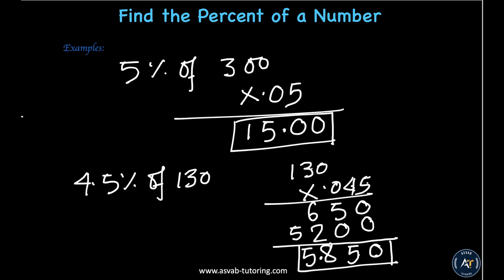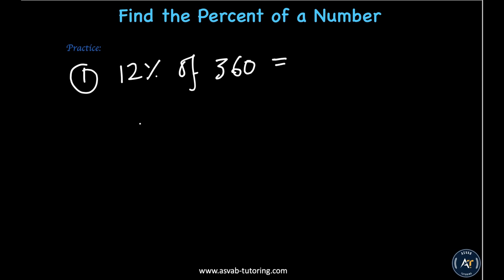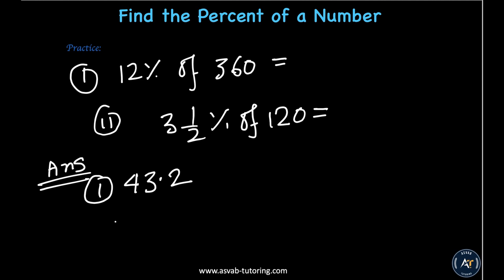Practice problems: number one is 12 percent of 360, and number two is three and one half percent of 120. The answers are: number one is 43.2, and number two is 4.2. Try them yourself and make sure you understand before moving on.